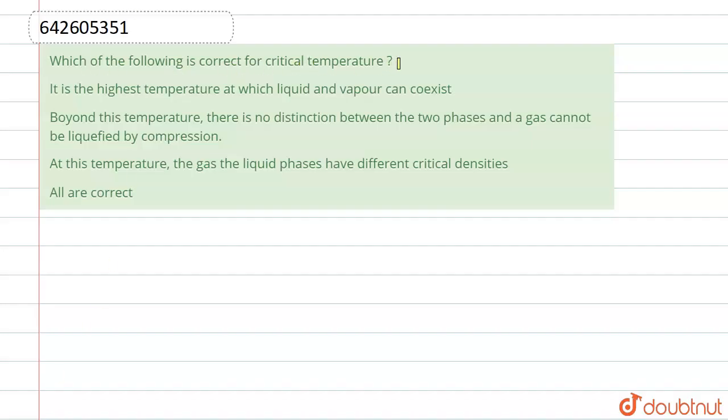which of the following is correct for critical temperature? So our critical temperature is Tc, and we have four options given here. Critical temperature, we know that it is the highest temperature at which a substance can exist as liquid.